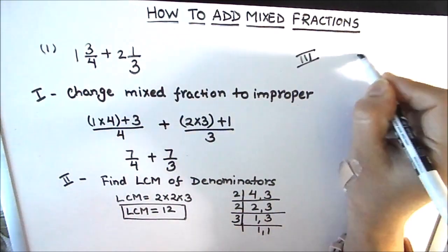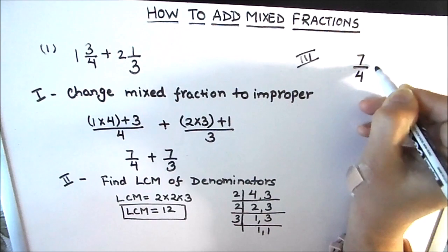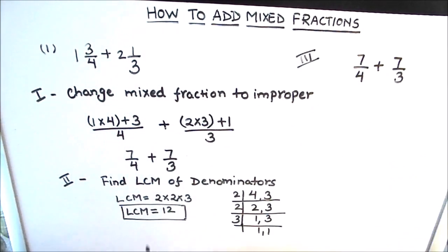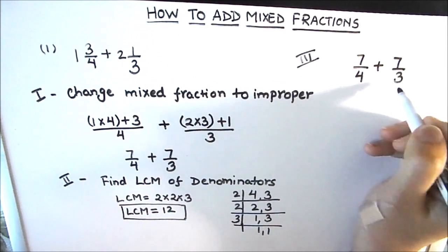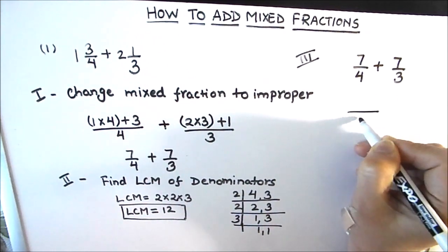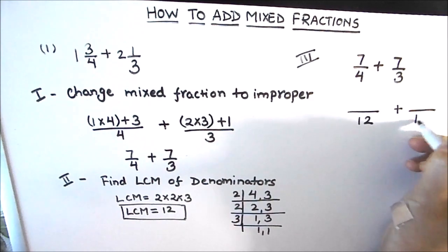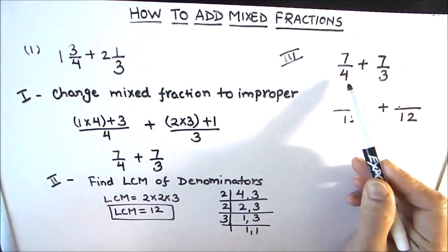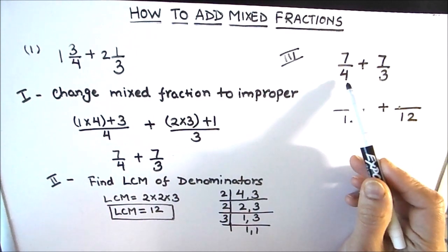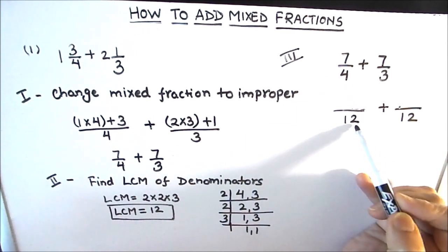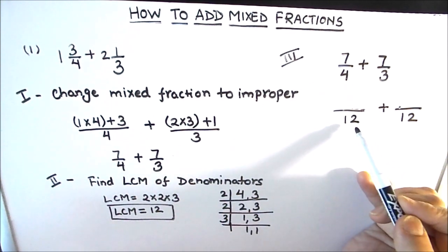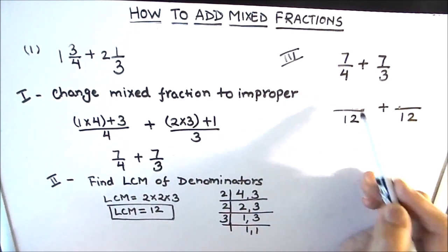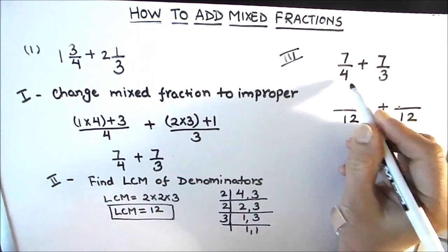Now we come to the third step where we are going to add the two numbers. So this is 7/4 + 7/3, and their LCM is 12. We are going to make the two denominators equal to 12. In the first fraction we have changed the denominator from 4 to 12: 4 × 3 = 12, so we have multiplied the denominator by 3. As we multiplied the denominator by 3, we need to multiply the numerator by 3 as well.